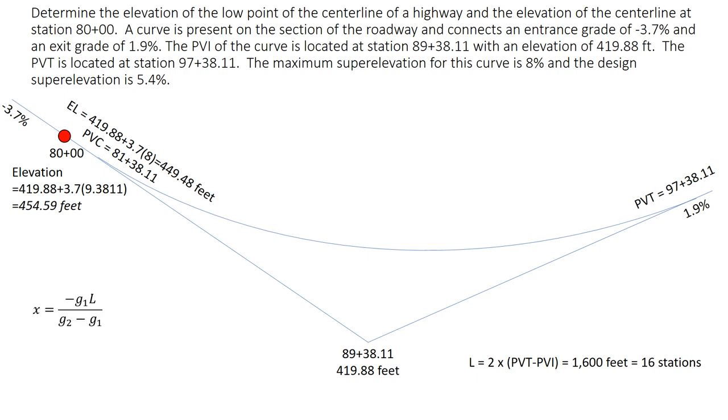Next we can calculate where our low point occurs. That's again one of the things we're asked for, to determine the elevation of the low point. We can use our equation for x: x equals negative g1 times L over g2 minus g1.